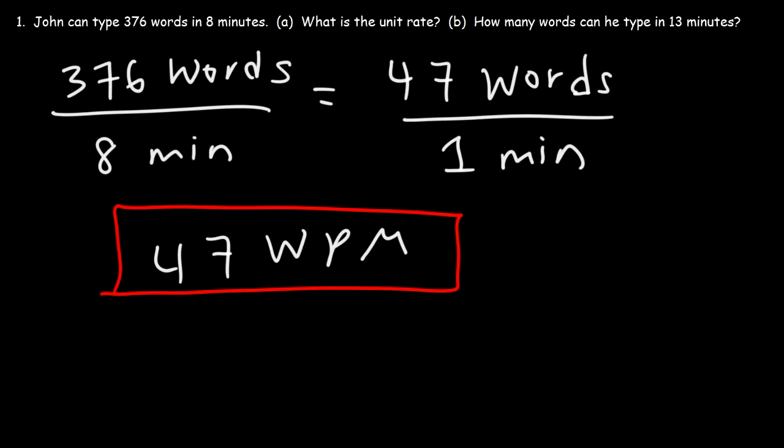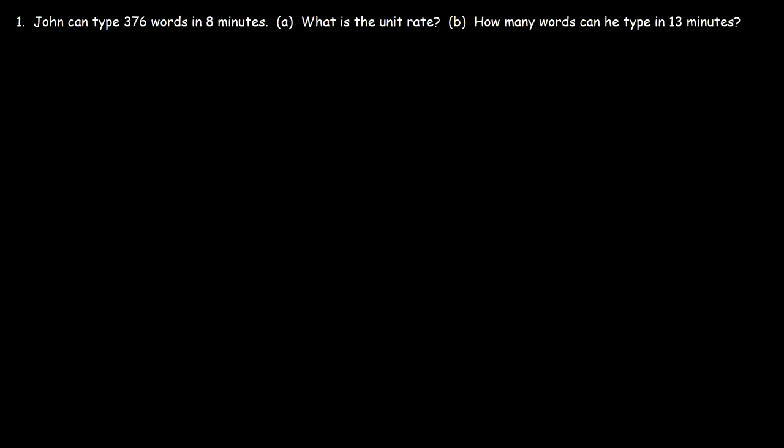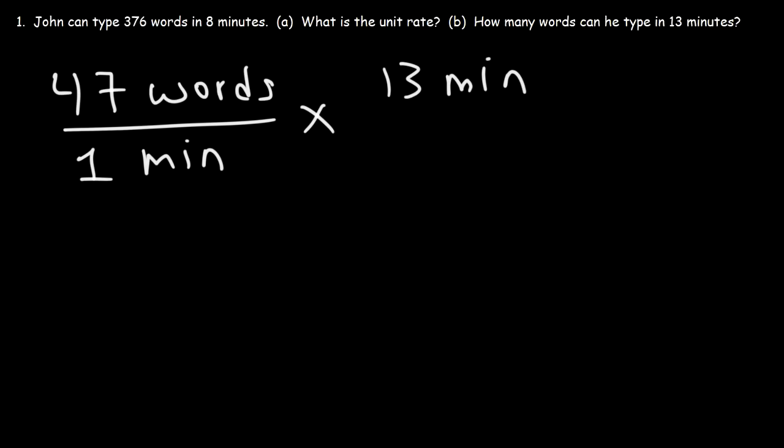Now what about part B? How many words can he type in 13 minutes? There's two ways we can get the answer. One way is to start with the unit rate. We know that John can type 47 words per one minute. If we multiply this by 13 minutes, notice that the unit minutes will cancel, and we'll have the unit words left over. So it's 47 times 13, and the answer is 611 words. So in 13 minutes, this is how many words he can type.